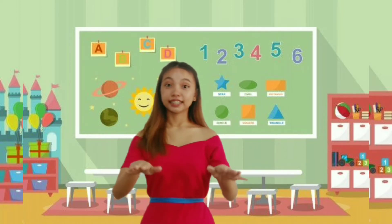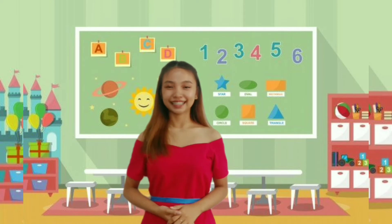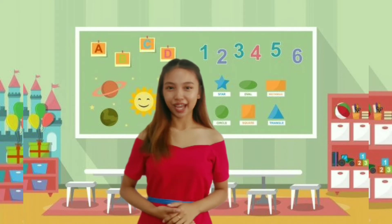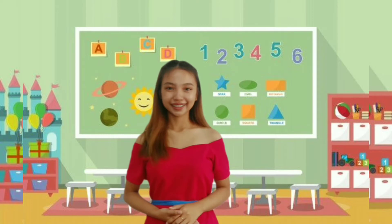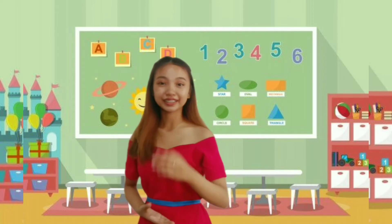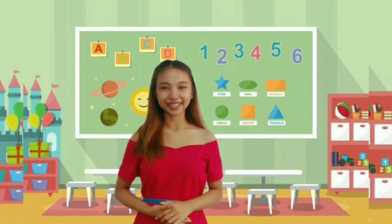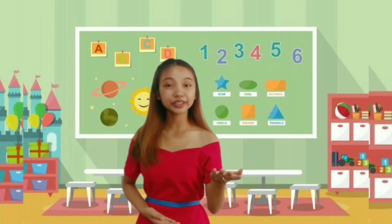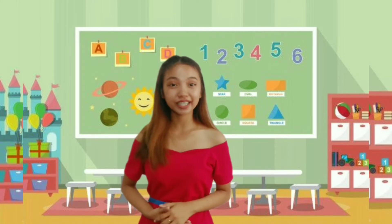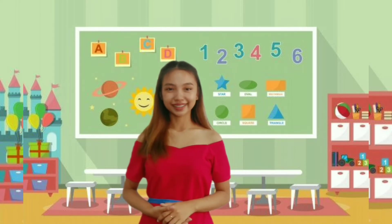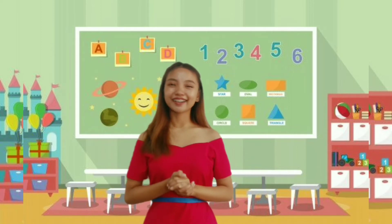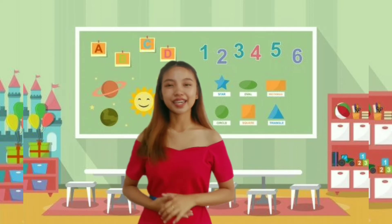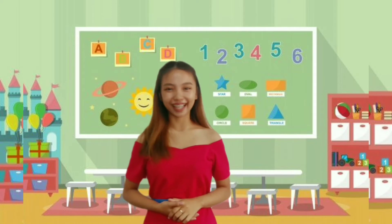Please settle down and let us check your attendance. Row 1, is there any absent in your row? Row 2, is there any absent in your row? How about row 3, is there any absent in your row? Very good! Since no one is absent, give yourselves a perfect clap.